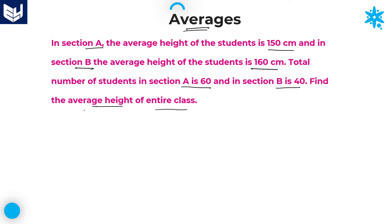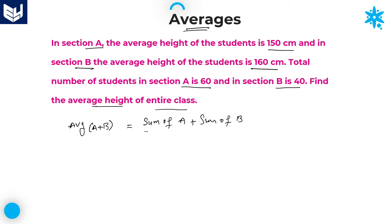If we want to calculate the average height of the entire class, that means A and B sections together. The average of A and B together is equal to — as we know, average equals sum of observations divided by number of observations. So the sum is the sum of section A plus sum of section B, divided by the total strength in both sections together. That will give the average of the entire class.